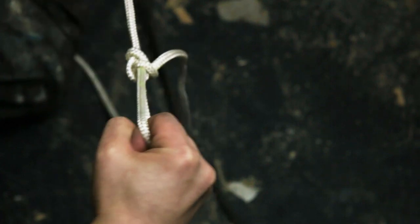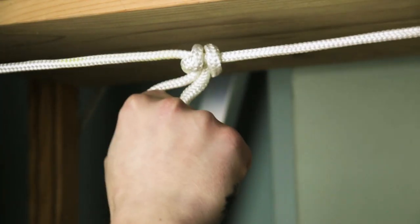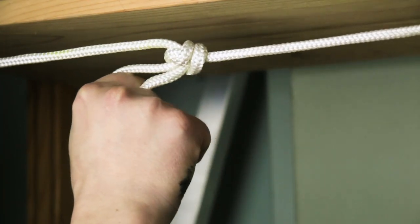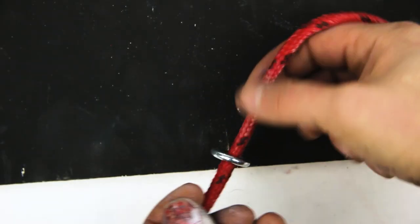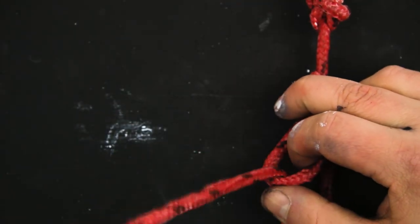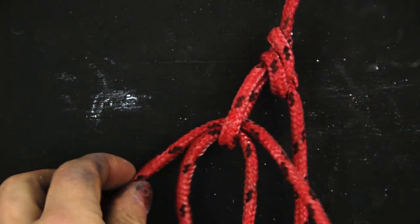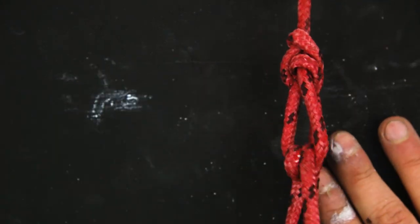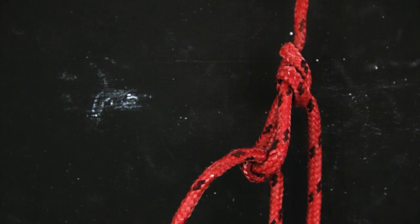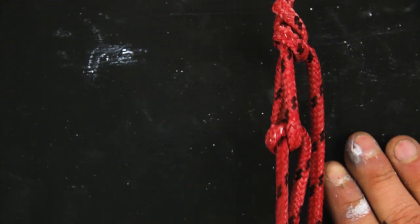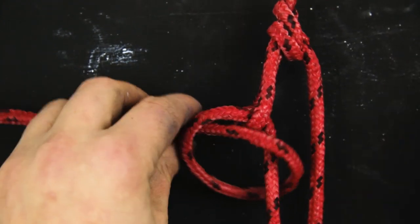Then with the butterfly knot, you could tie a trucker's hitch. So around the ring, or something similar. And then once and twice. This is your checkpoint. This will hold your progress. You tighten, and then put two half knots in there.